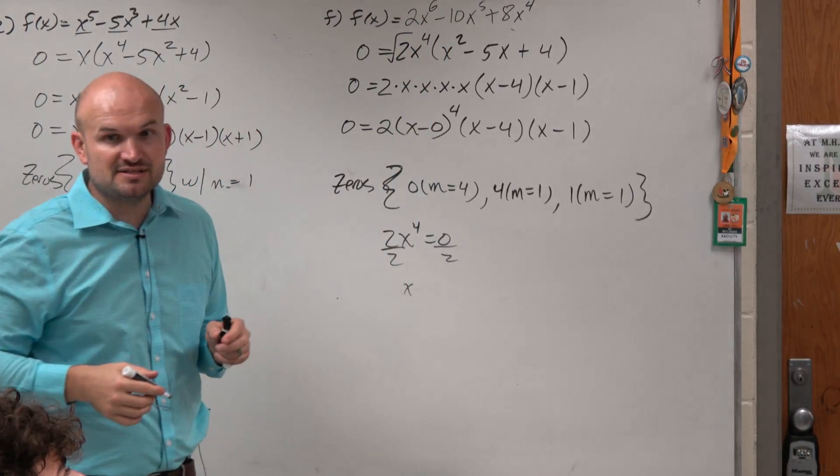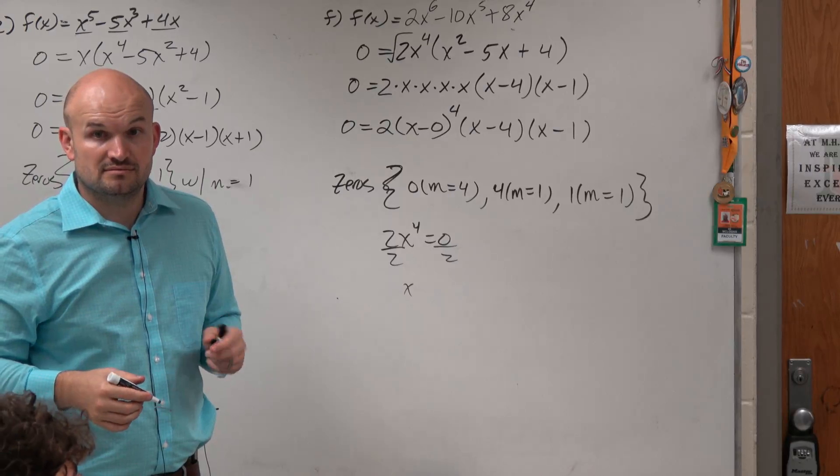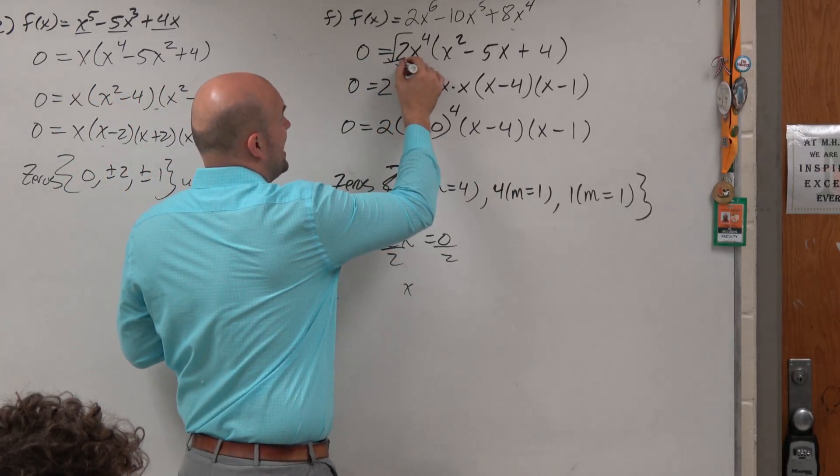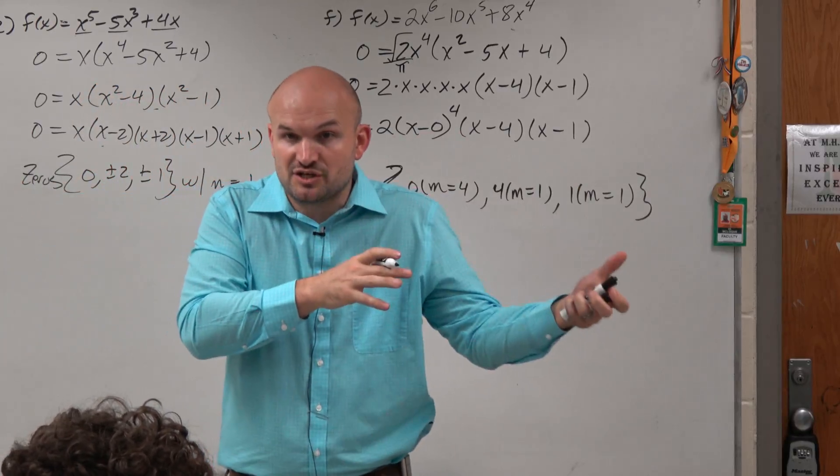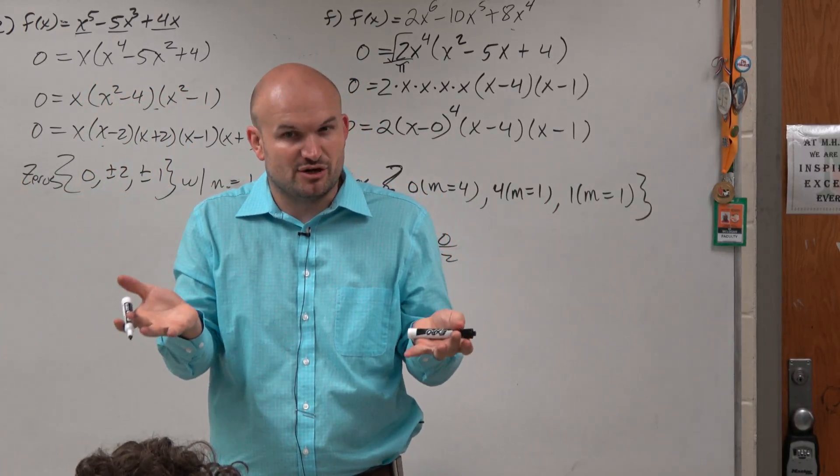Could this be square root of 2? Would it make any difference? No. Could it be 2 divided by pi? Would it make any difference? No. So that's just what we call a factor of the polynomial. It's not going to affect the zeros. OK?